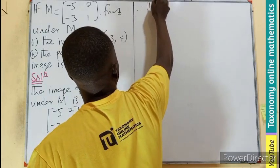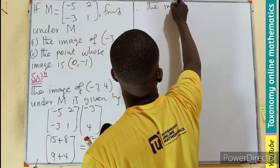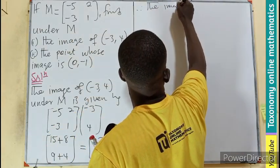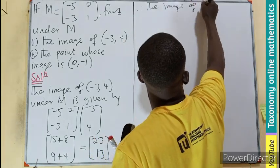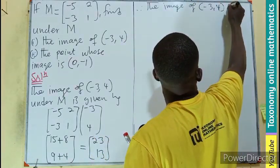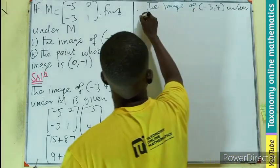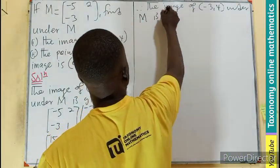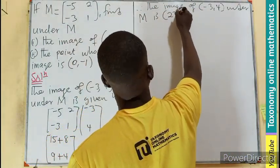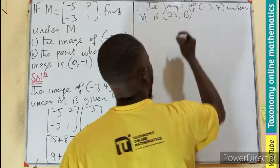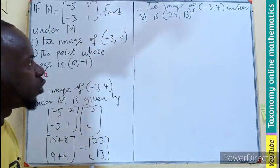So therefore, the image of (-3, 4) under M is going to be given by 23 and 13. So that is the image we are looking for.